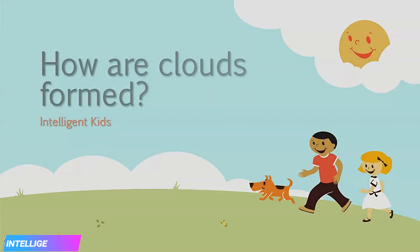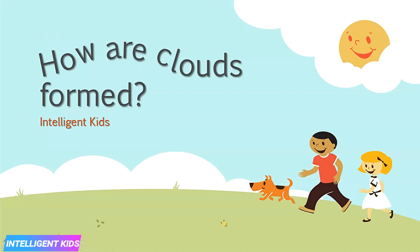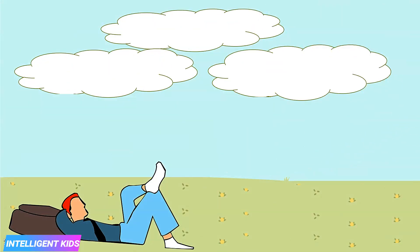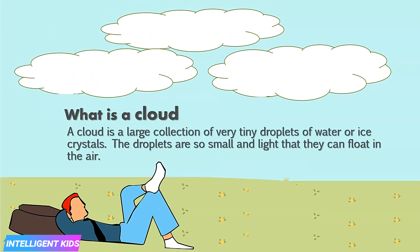In this video I will be explaining to you how clouds are formed. First I will be telling you what is a cloud. A cloud is a large collection of very tiny droplets of water or ice crystals. The droplets are so small and light that they can float in the air.